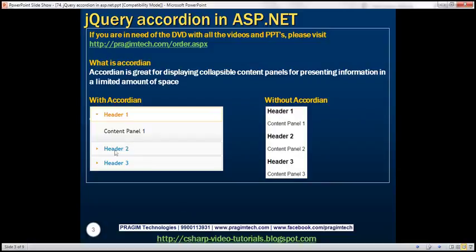Here we have an example with data like header 1 with content panel 1, and similarly header 2 and header 3 each with their own data. If we are not using accordion, all content is shown on the page at once. But if we use accordion, header 1's panel is expanded and we see its content. When I click on header 2, the content panel of header 1 is hidden and the content panel of header 2 becomes visible. This accordion is great for displaying collapsible content panels in a limited amount of space.